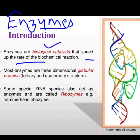Structure-wise, these enzymes are going to have a three-dimensional structure. Three-dimensional structure means they are either going to have a tertiary structure or a quaternary structure. These are always made up of proteins — globular proteins having secondary, tertiary, and quaternary structure.